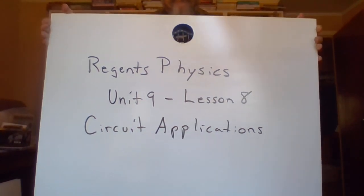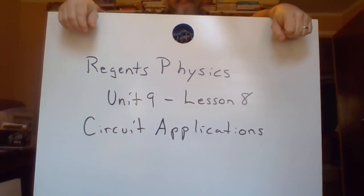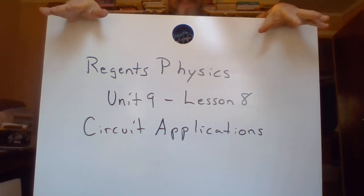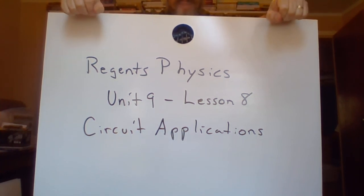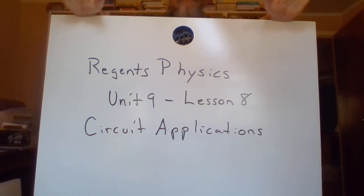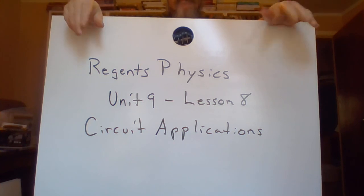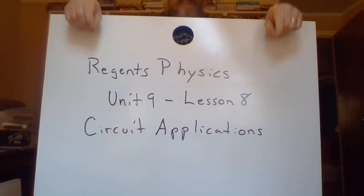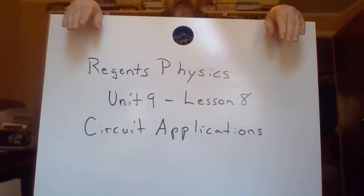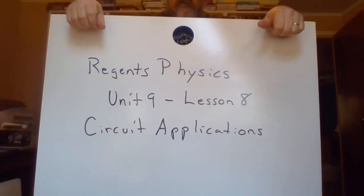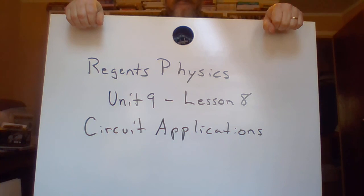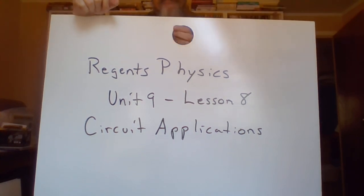Hello again, it's your friendly physics teacher. This time for the Regents physics class we're doing unit 9, lesson 8 — the last lesson in this particular unit: circuit applications. What I mean by that is devices that don't actually affect the circuit directly but have an impact on it, like fuses, circuit breakers, ammeters, voltmeters, and a thing called a GFI or ground fault interrupter, and we're going to be looking at how those interact with and are used in circuits.